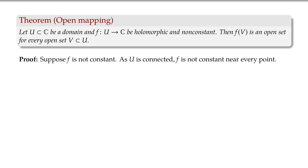To prove this, suppose F is not constant. Since U is connected, it's not constant near every point. What that means is that near every point there is a neighborhood such that the restriction to that neighborhood is not constant. Because if it were constant on some neighborhood, it would be constant everywhere if U is a domain. So if it's non-constant, then it's non-constant near every point.